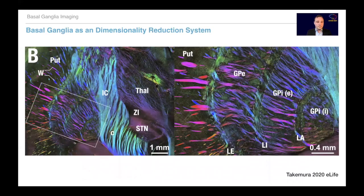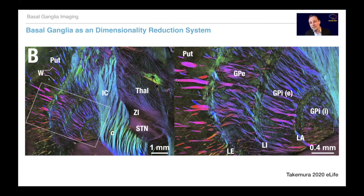The basal ganglia also form a dimensionality reduction system, which you can literally see in this beautiful image using polarized light imaging of a coronal slice through the brain of a vervet monkey. Wilson's pencils go through the putamen, then rewire in the external lamina, run parallel again in the external pallidum, rewire again, then run parallel in the GPi, and rewire once more. You can literally see how cortical information gets compressed to a smaller space — just as in many machine learning applications we study today.